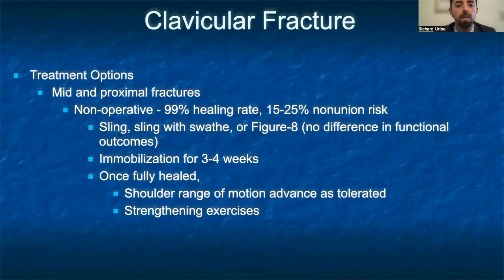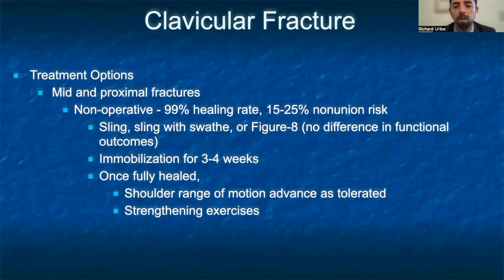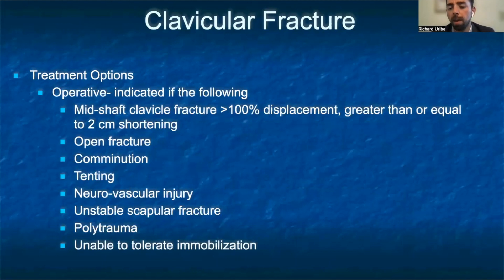The first-line treatment for mid- and proximal clavicular fractures is non-operative management, with a 99% healing rate, but a 15-25% risk of non-union. Non-operative management includes a sling, a sling with swath, or a figure-eight brace, with no difference in functional outcomes between these options. Immobilization is usually discontinued at three to four weeks, after which range of motion and strengthening exercises should begin. Indications for surgical management include mid-shaft fractures with over 100% displacement and over 2 cm shortening, open fractures, comminution, skin-tenting, neurovascular injury, unstable scapular fractures, polytrauma, and inability to tolerate immobilization.